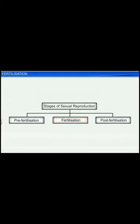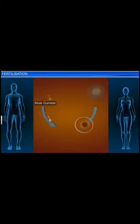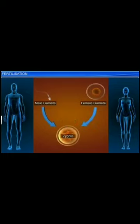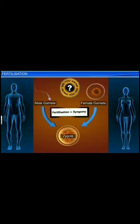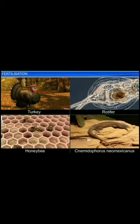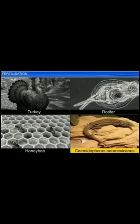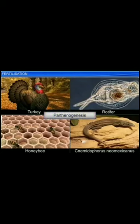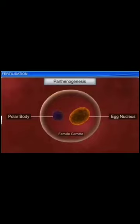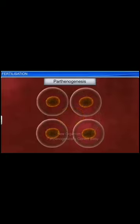Fertilization is also the hallmark of the process. During this stage, the male and female gametes fuse to form a diploid zygote. Did you know that syngamy is the other word used to describe the process of fusion of gametes, or fertilization? Interestingly, fertilization does not occur in every sexually reproducing organism. In certain organisms such as turkey, rotifers, honeybees and even some lizards such as Neemidophorus neomexicanus, a process called parthenogenesis takes place. In this process, the female gamete does not fuse with the male gamete but undergoes developments such as cell division or chemical changes to form new organisms.